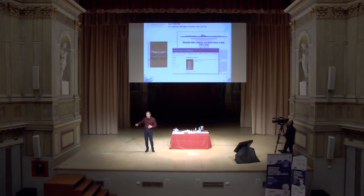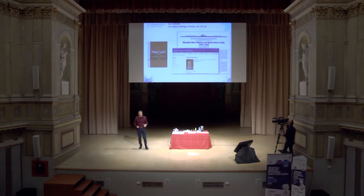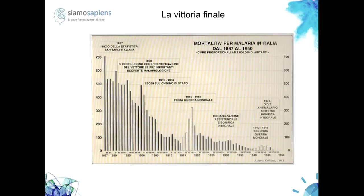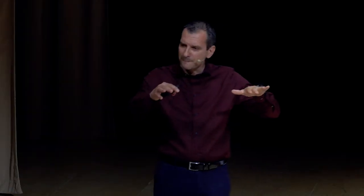A qualche chilometro da Roma si è consumato il primo esempio nella storia di guerra batteriologica. In questo grafico viene riportato l'andamento della malaria in tutta Italia. Guardate quel piccolo picco che sta tra il 40 e il 45: quelli sono i casi che sono avvenuti a Latina, nell'agropontino, che alzano tutta la media nazionale.